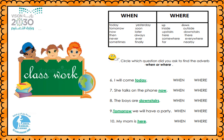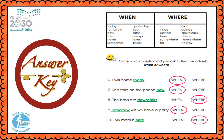Number nine: 'Tomorrow we will have a party.' The adverb is 'tomorrow' — it tells us about the time. Which question? When. When will we have a party? Tomorrow — circle when. Number ten: 'My mom is here.' The adverb is 'here.' Which question? Where. Where is my mom? Here — it tells us the place. Check all your answers again please.